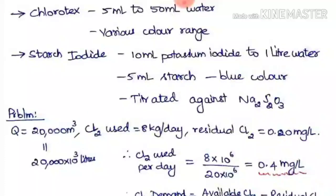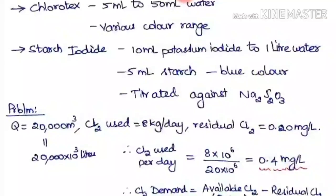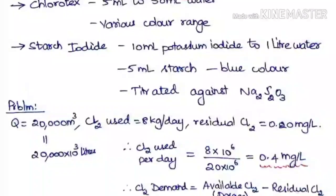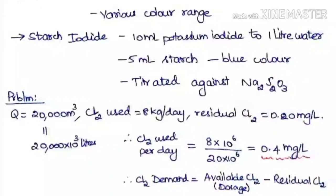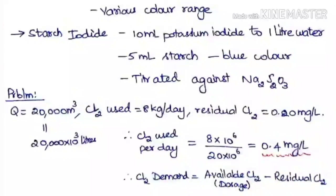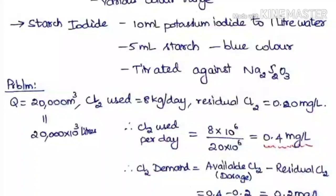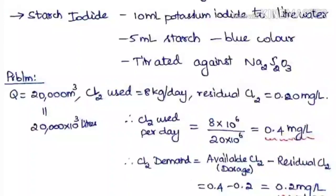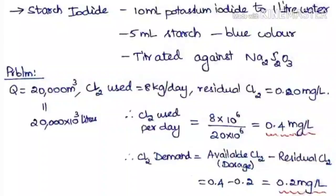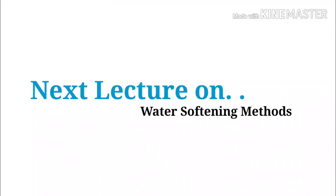The calculation gives a chlorine dosage of 0.4 mg/L. The chlorine dosage equals the chlorine demand plus the residual chlorine. Therefore, the chlorine demand equals chlorine dosage minus residual chlorine: 0.4 minus 0.2 equals 0.2 mg/L. So the chlorine demand is 0.2 mg/L.